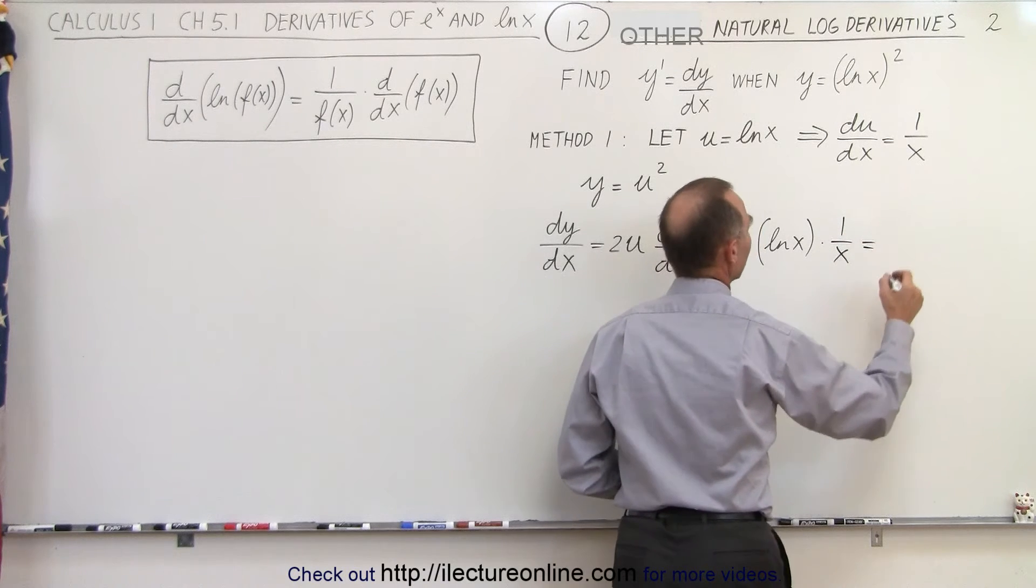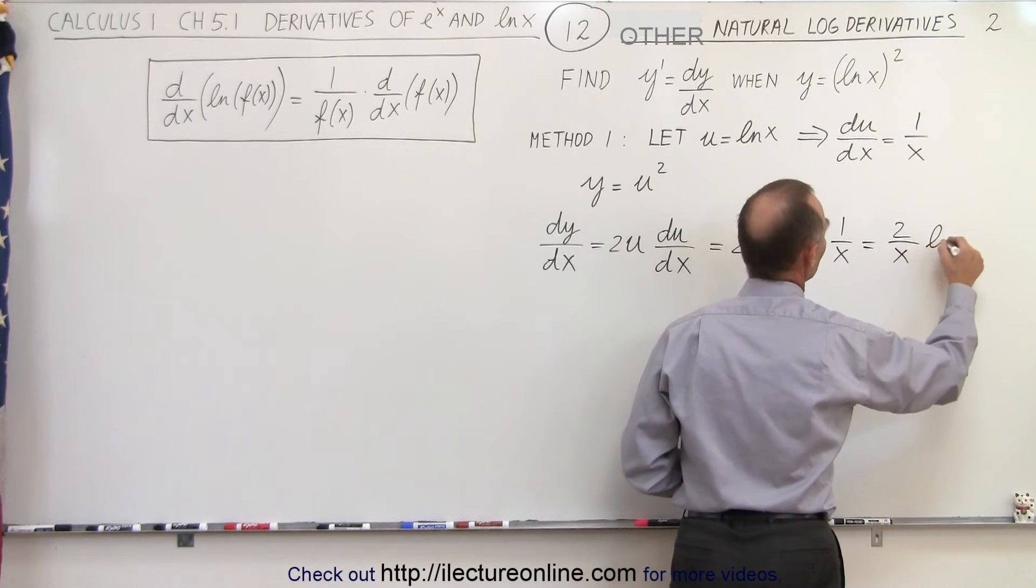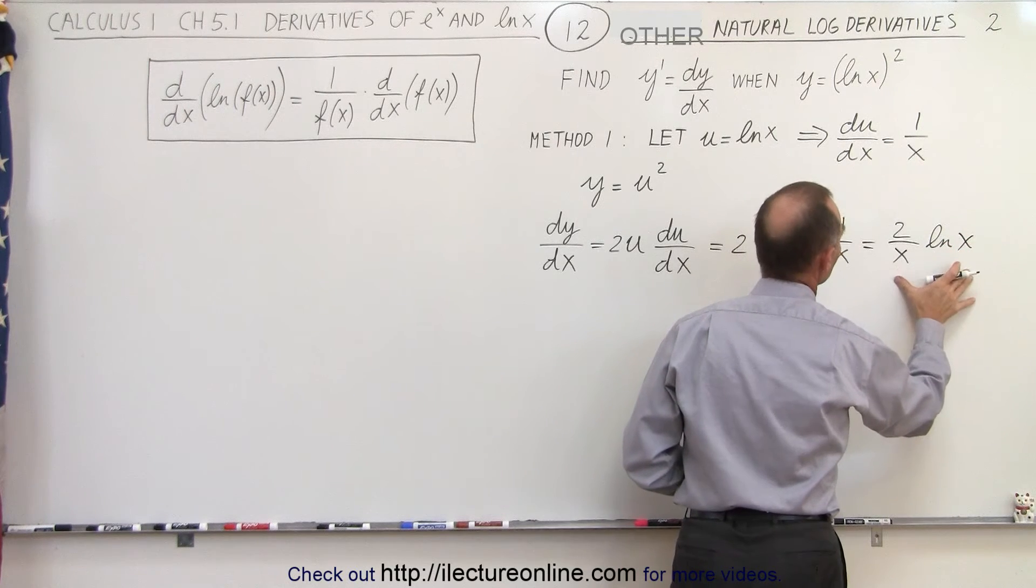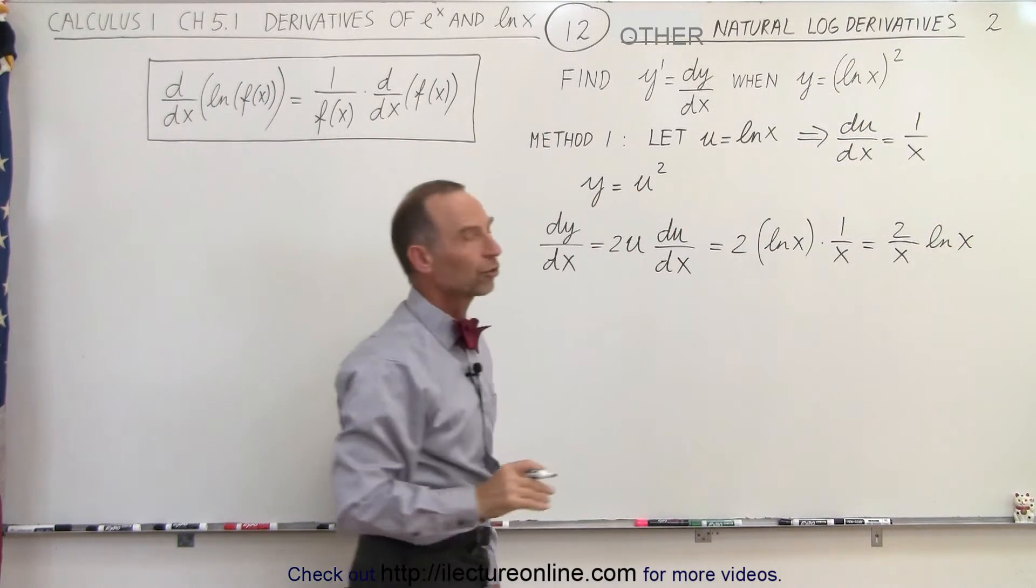So, simplified, this is equal to 2 over x times the natural log of x. And this will then be the derivative of our original function.